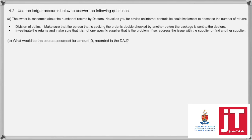Then, what is the source document for D recorded in the Debtors' Allowance Journal? The source document for the Debtors' Allowance Journal is always a credit note.